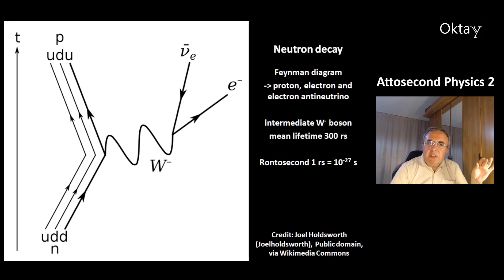This is a Feynman diagram of the neutron decay. The y-axis is time. You can see here the neutron, one up quark, two down quarks. Here is the proton, up, down, up quarks. The neutron decays into a proton, electron, and an electron antineutrino. And there is an intermediate particle, that is the W minus boson. Its mean lifetime is 300 rontoseconds. And one rontosecond is 10 to the minus 27 seconds.